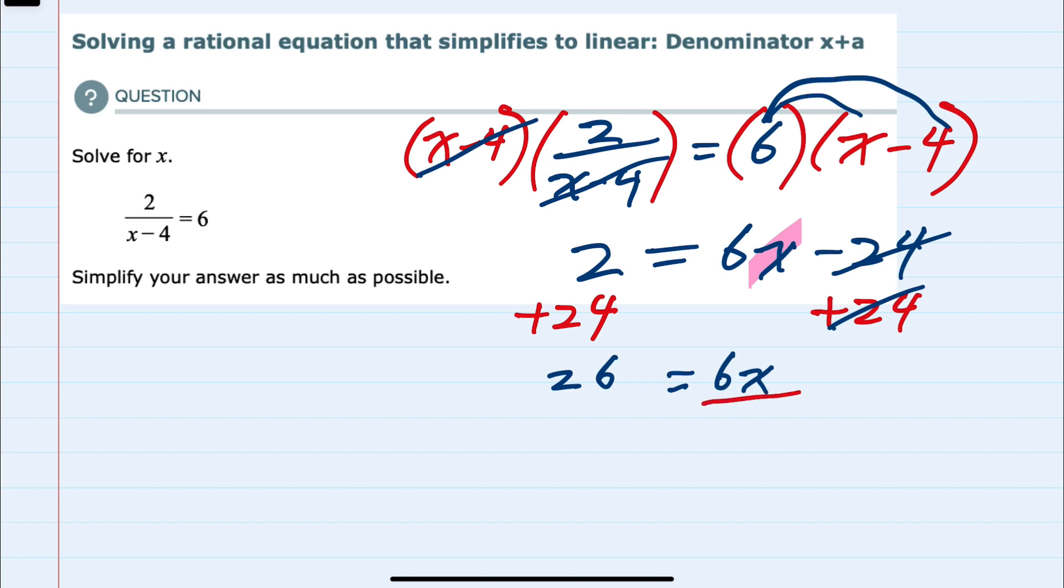I can then divide both sides by 6 to isolate the variable on the right hand side, leaving me with x on the right. The left hand side simplifies because 6 goes into 26 four times